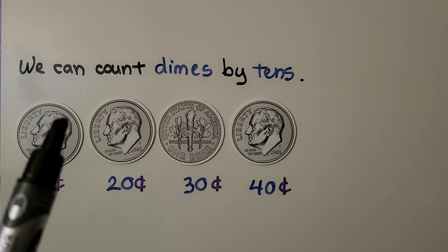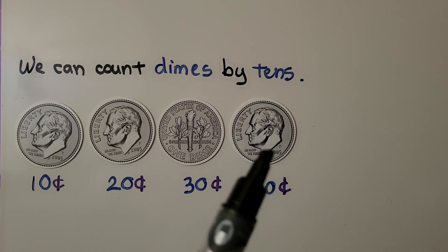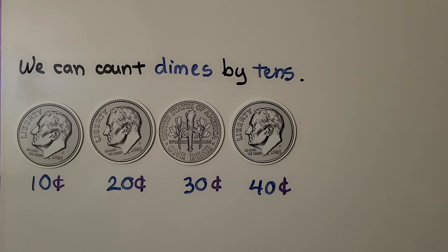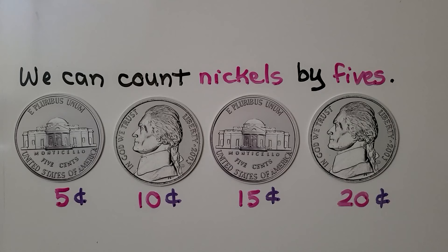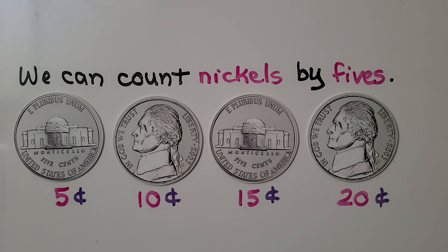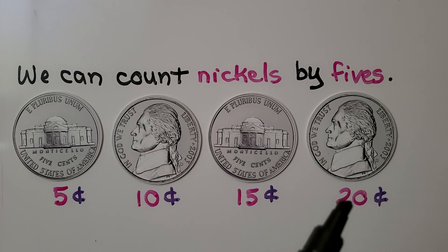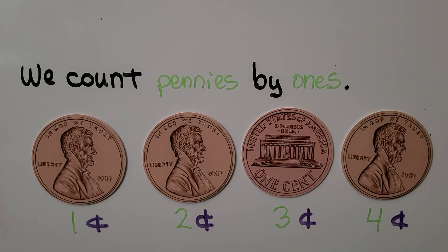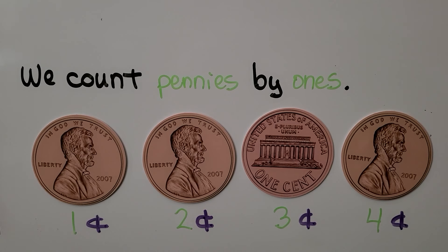We can count dimes by tens. They're each worth 10 cents, so we count: 10, 20, 30, 40 cents. Because each nickel is equal to 5 cents, we can count nickels by 5 to find their value: 5, 10, 15, 20 cents.